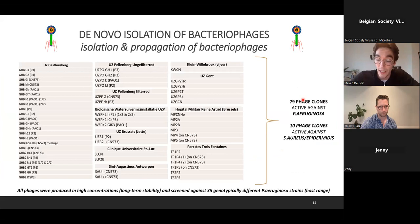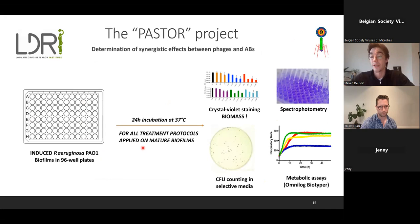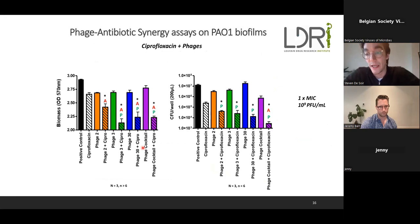This entire process resulted in a collection of about 80 phage clones active against Pseudomonas aeruginosa and about 10 phage clones active against Staph aureus and Staph epidermidis. These were all produced in high titers for long-term stability. The next thing I needed to do was test them on biofilms, so I grew PA1 Pseudomonas aeruginosa biofilms in 96-well plates and after 24 hours obtained a mature biofilm.